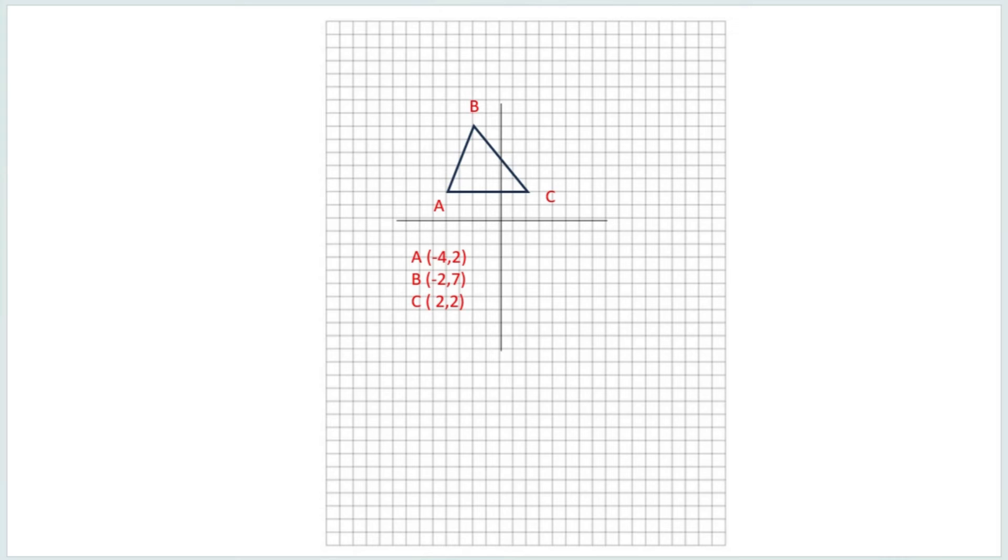So let's look at if we had a scale factor less than one. So if the scale factor is one half, we would multiply again each of the numbers. So our A prime would equal negative four times one half, which would give us negative two. Two times one half would give us one. B prime, negative two times one half would be negative one. Seven times one half would be three and a half, or seven over two. And C prime would be two times one half is one, in both positions.